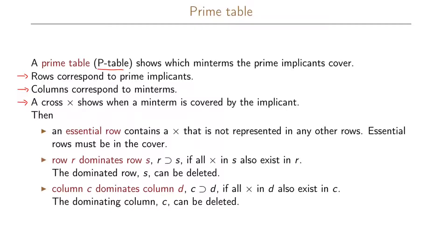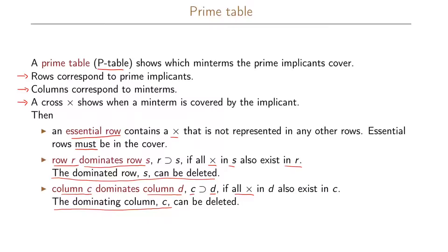We can use three definitions and properties in order to find our minimum cover. An essential row contains an x that is not represented in any other row, so essential rows must be in our cover. A row r dominates row s if s is a proper subset of r — meaning all x's in s also exist in r — and the dominated row s can be deleted from the table. For columns, column c dominates column d if d is a proper subset of c, so all x's in d also exist in c, and the dominating column c can be deleted from the prime table.